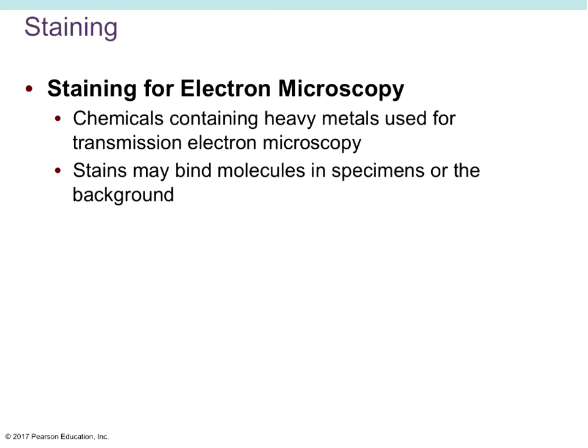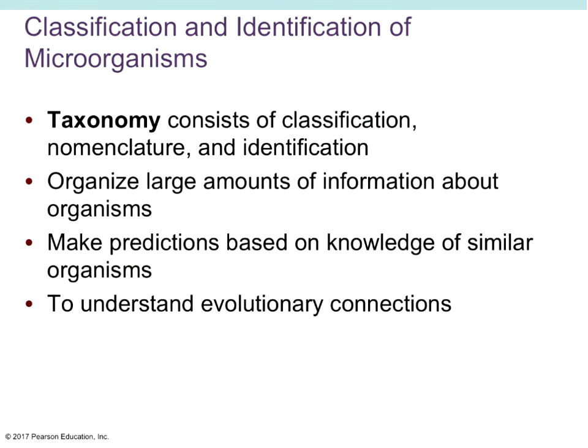Staining for an electron microscope is very important — we have to stain with heavy metals. The stains bind to molecules in the specimen or to the background to give the electron beam something to bounce off of in order to produce an image. Because of this, our specimen is typically going to die as a result of electron microscopy.